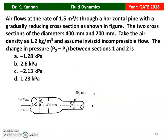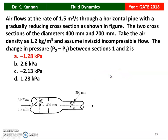Next question from the 2018 question paper. Air flows at a rate of 1.5 m³/s through a horizontal pipe with a gradually reducing cross-section. The two cross-sections have diameters of 400 mm and 200 mm. Air density is 1.2 kg/m³; assume inviscid incompressible flow. The change in pressure P₂ − P₁ between points 1 and 2 is −1.28 kPa.